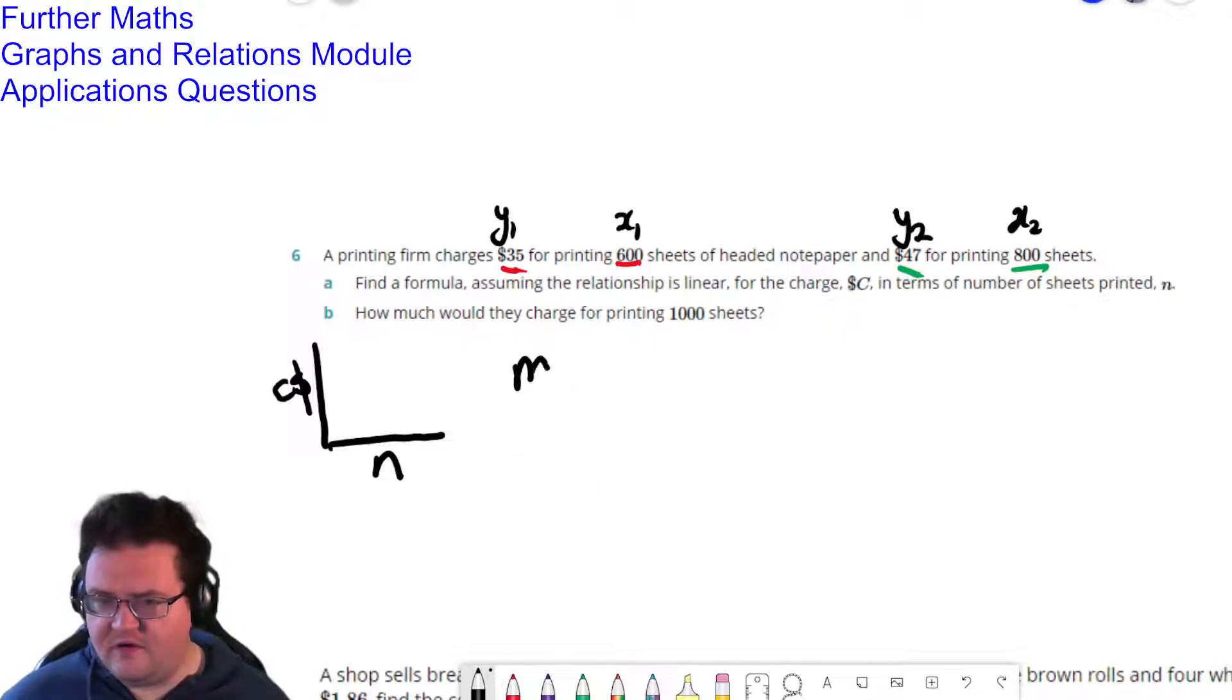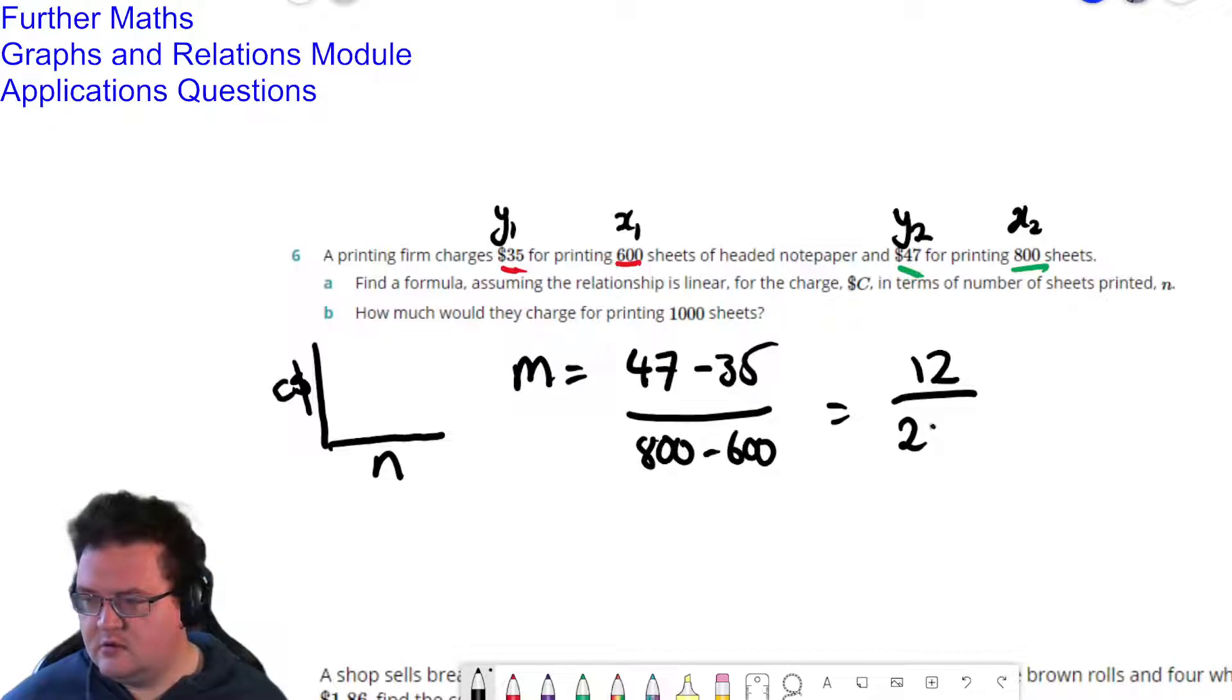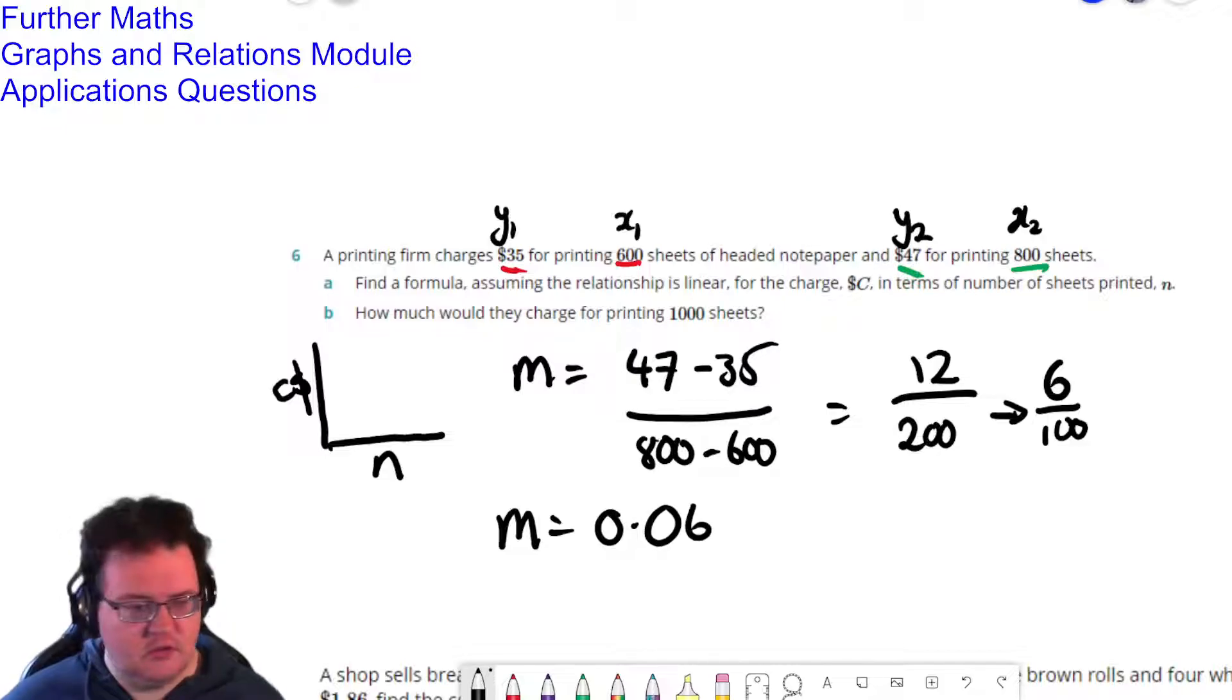So first things first, we need to find the gradient. So y2 minus y1, so that's going to be 47 minus 35 divided by 800 minus 600. So that's going to be 12 over 200, which is 6 over 100. So I'm going to be printing, so the relationship, because we're assuming it's linear, is going to have a gradient of 0.06.